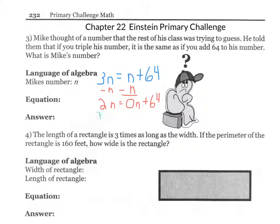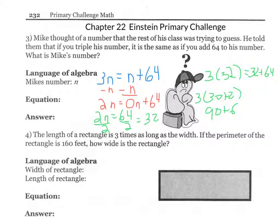We have 2 times n equals 64. To find what one n is, we divide by 2, which equals 32. So let's see if that's true: is 3 times 32 equal to 32 plus 64? 3 times 32 is 3 times 30 plus 2, which equals 90 plus 6, which is 96. And 32 plus 64 equals 96.